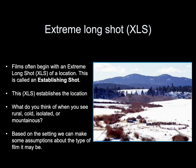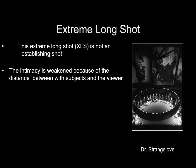Extreme long shot. Films often begin with an extreme long shot of a location — this is called an establishing shot. This extreme long shot establishes a location; seeing something rural, cold, isolated, and mountainous lets us make assumptions about the type of film. Another example of an extreme long shot comes from Dr. Strangelove — this one is not an establishing shot, and the intimacy is weakened because of the distance between the subjects and the viewer.